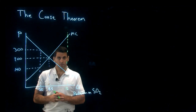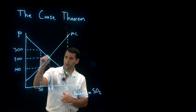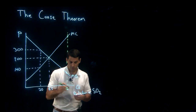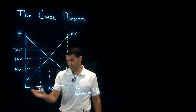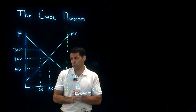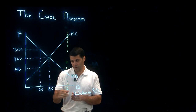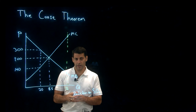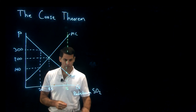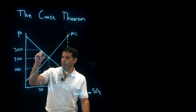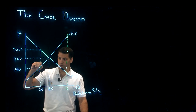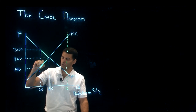As always, the efficient level of reduction is where marginal benefit intersects marginal cost. Say we're already abating 7 tons of sulfur dioxide per year. The question is: is it worthwhile to abate an extra 1.5 tons, going from 7 to 8.5 tons of abatement per year? The marginal benefit of that additional 1.5-ton reduction is given by our curve up here, but the marginal cost is only down here.